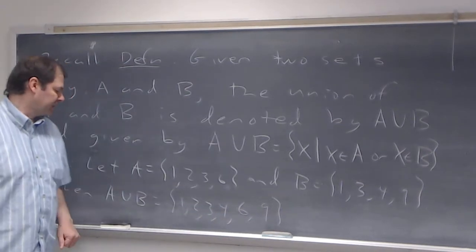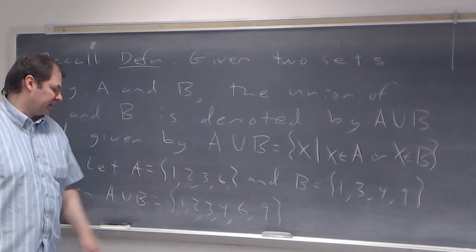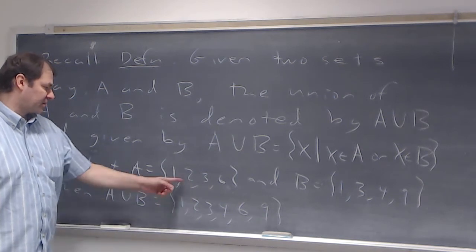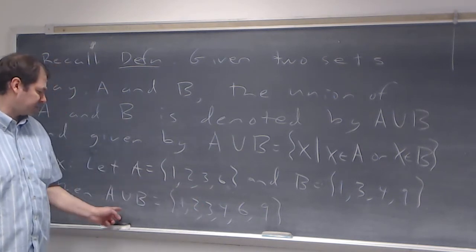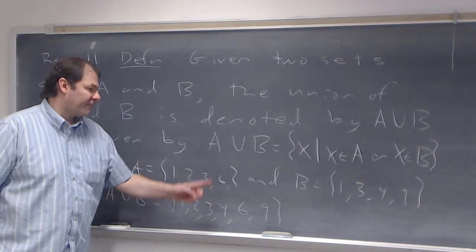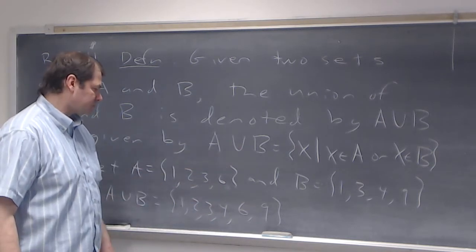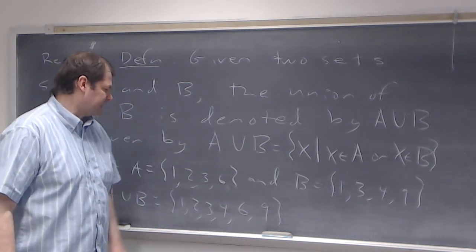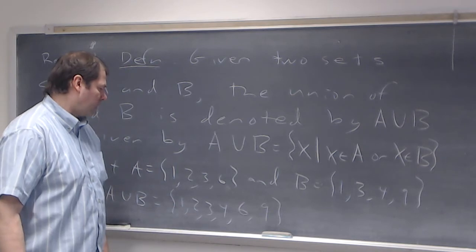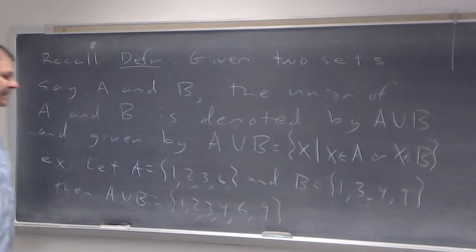So one is in A union B because one is in A. Two is in A union B because two is in A. Three is in A, so that makes three be in the union. Four is in B, so it gets into the union. Six is in A, so it's in the union, and nine is in B, so it's in the union. That's an example.